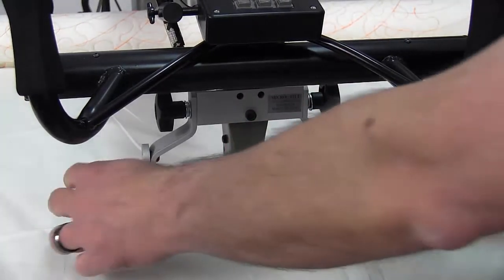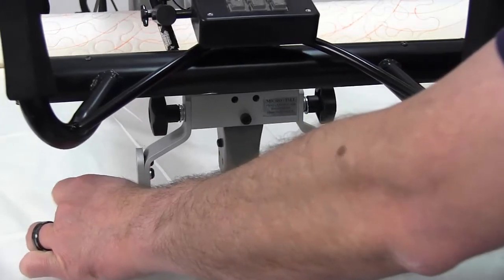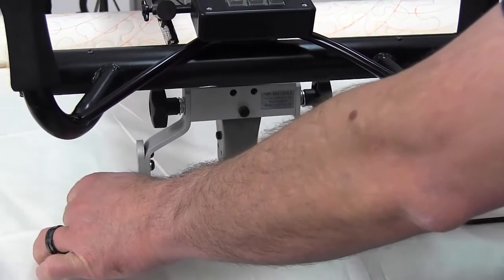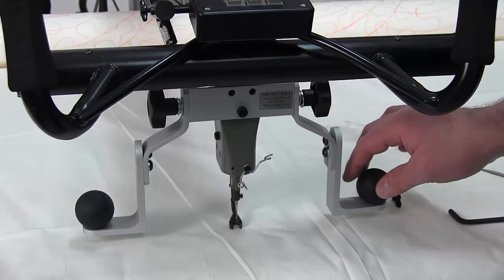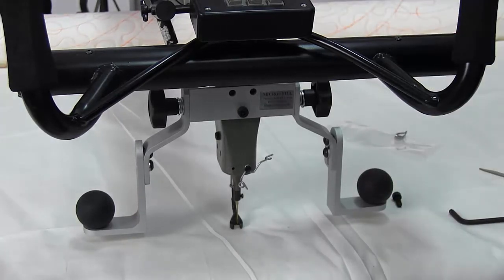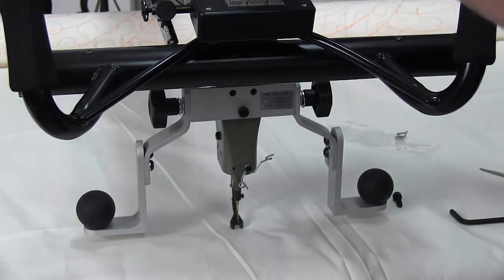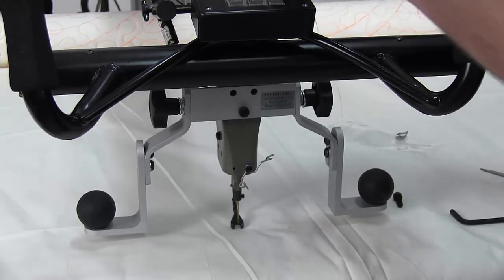Tighten it down. That gives you a little finer control over the machine, having it a little closer there. And then when you thread it, thread it normally down to the new thread guide.